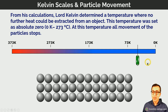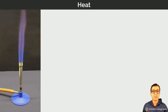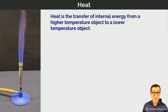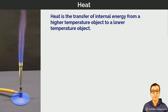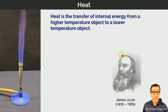Heat is a measure of the transfer of thermal energy from a hot object or system to a colder object or system. We need to draw a distinction between temperature, heat, and thermal energy, as well as another quantity called internal energy. Heat is a transfer — it's a measure of the amount of energy transferred from a hot object to a cold object — and as such it's measured in the same units as energy, namely the joule.